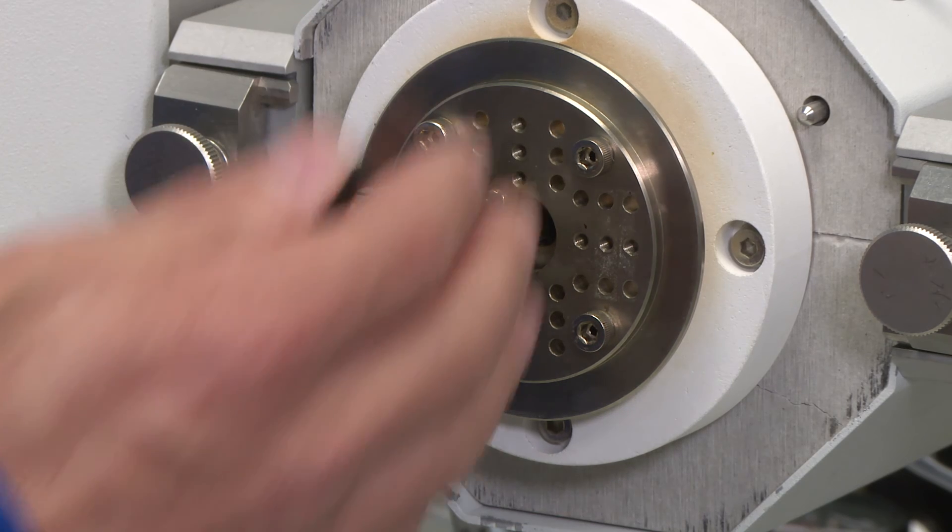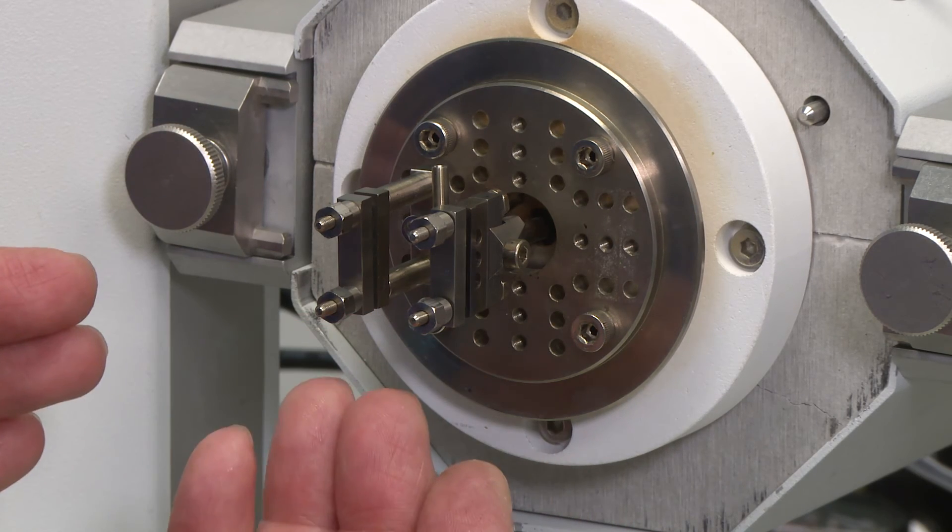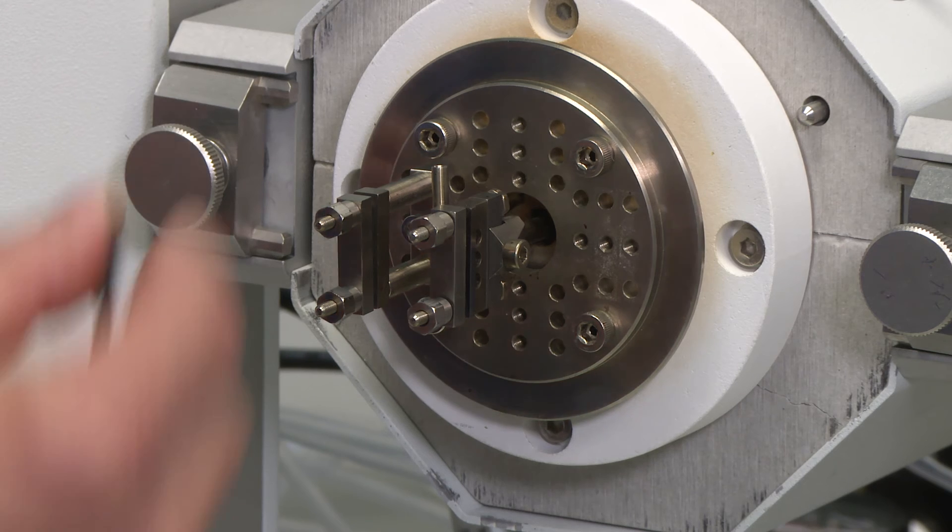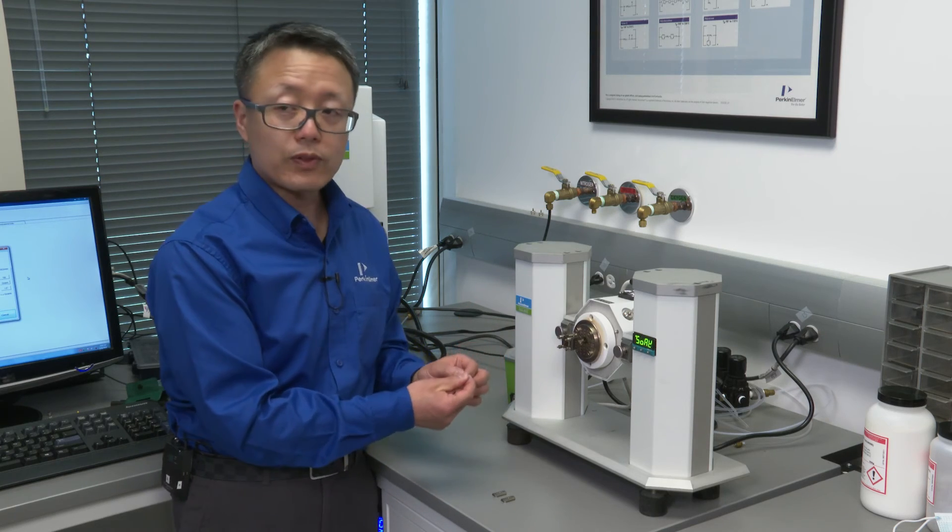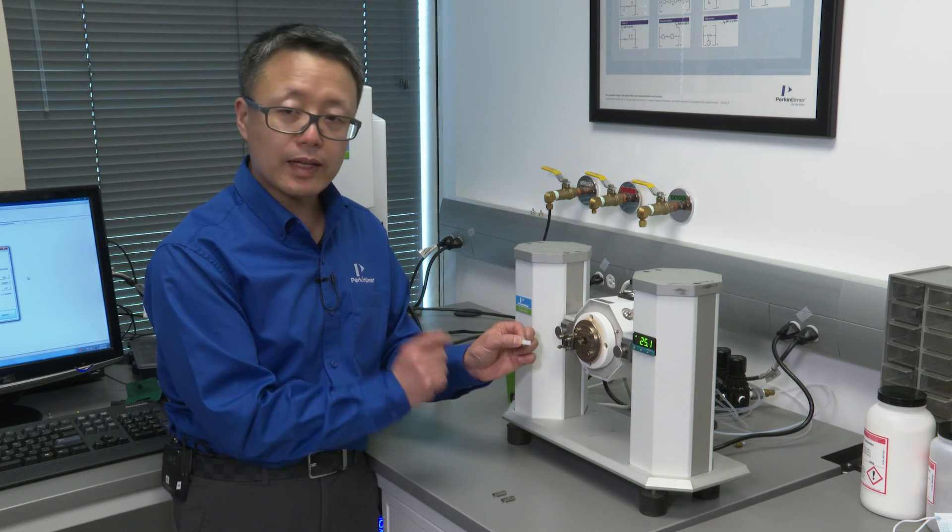The same way we set it up, the T-bar, the rectangular bars, and using the same hex nuts. This setup is usually for shorter samples than dual cantilever bending samples.